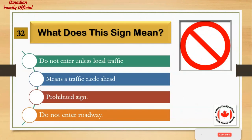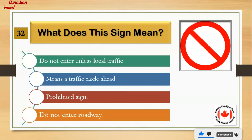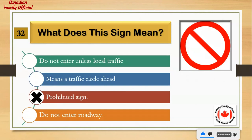What does this sign mean? Number 1: do not enter unless local traffic. Number 2: means a traffic circle ahead. Number 3: prohibited sign. Number 4: do not enter roadway. And the answer is: prohibited sign.